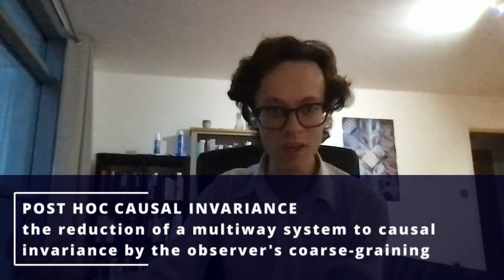Any arbitrary non-causal-invariant multi-way system could be reduced to one that was observationally equivalent to a causal-invariant one, so long as the observer performed a sufficient amount of coarse graining — so long as they added enough completion rules. That had one very nice consequence: it meant we could study multi-way systems without having to worry about whether they were causal invariant, because we knew the observer could impose causal invariance post hoc.